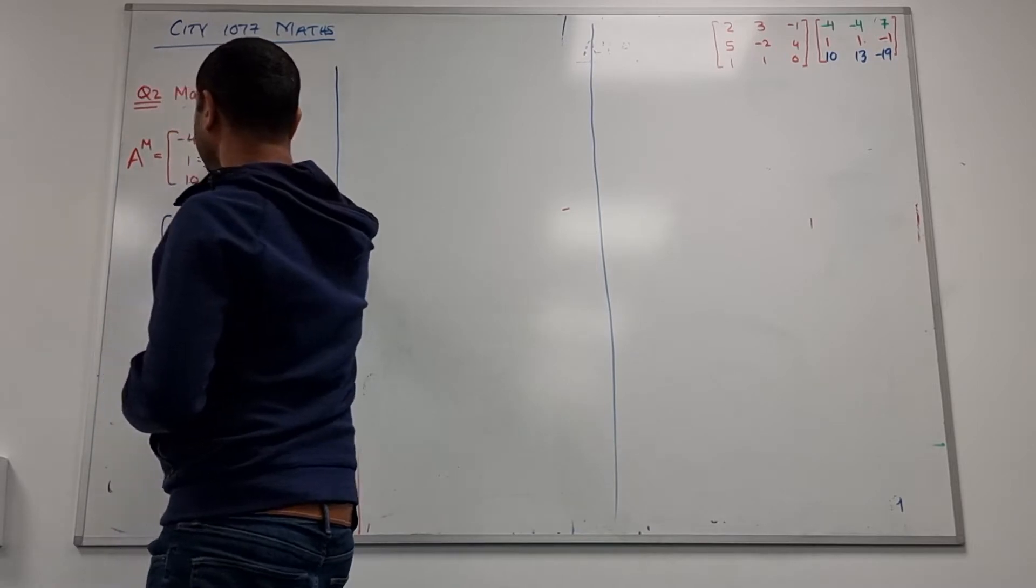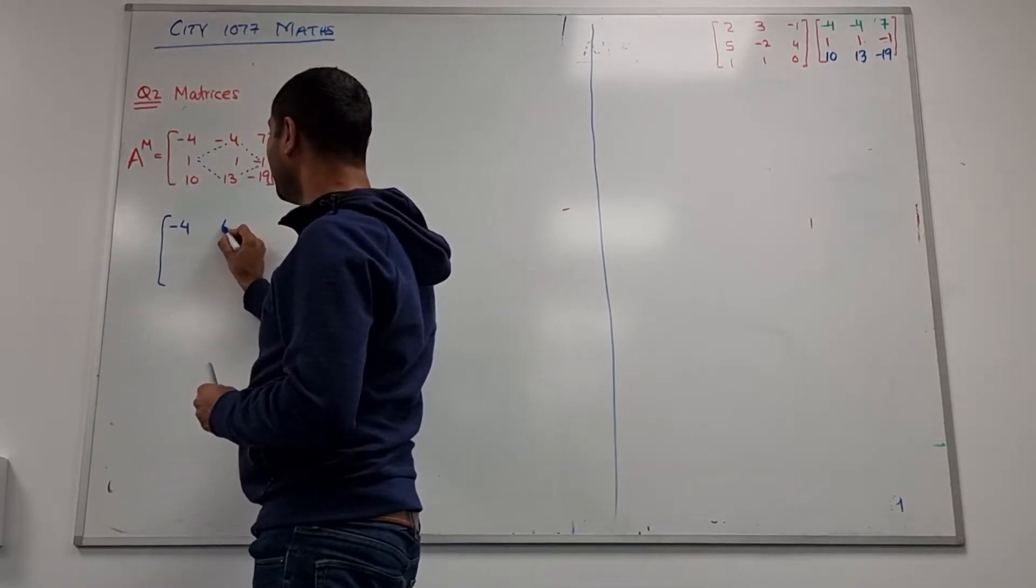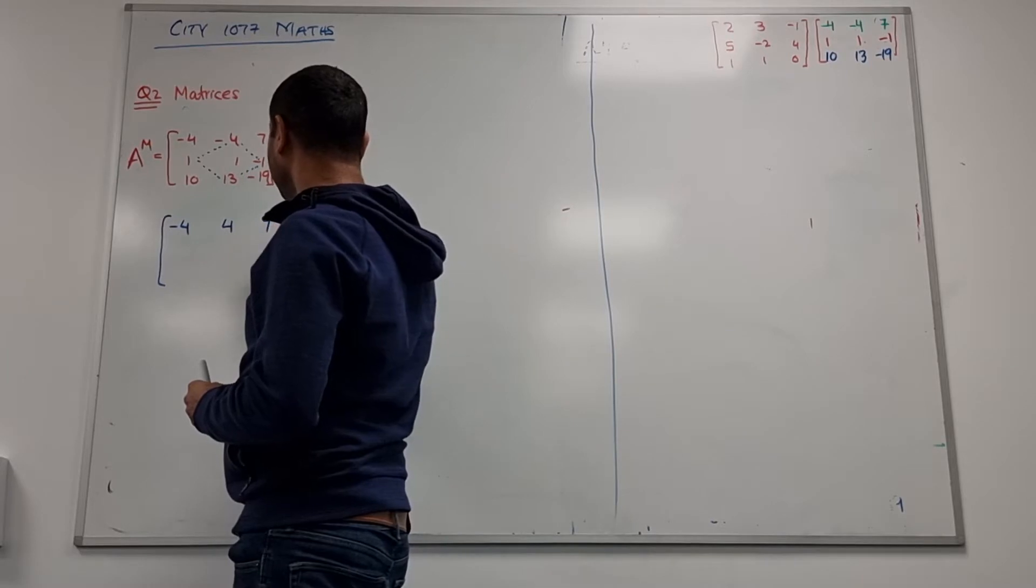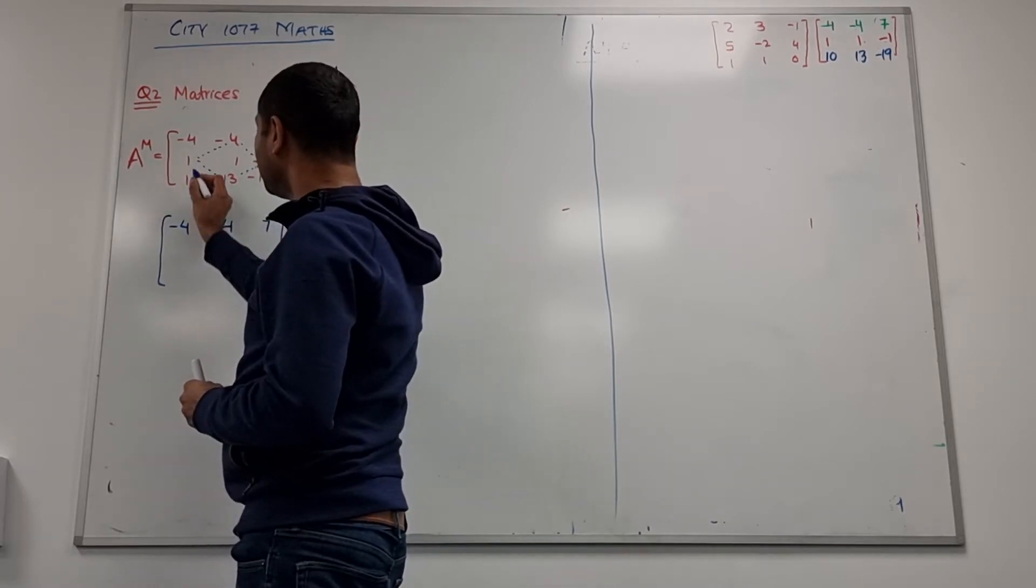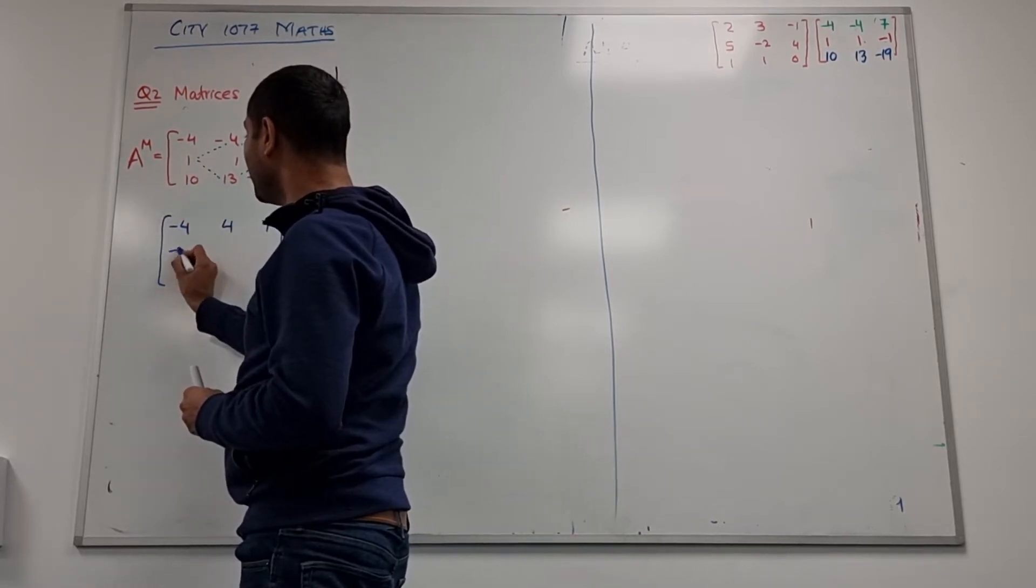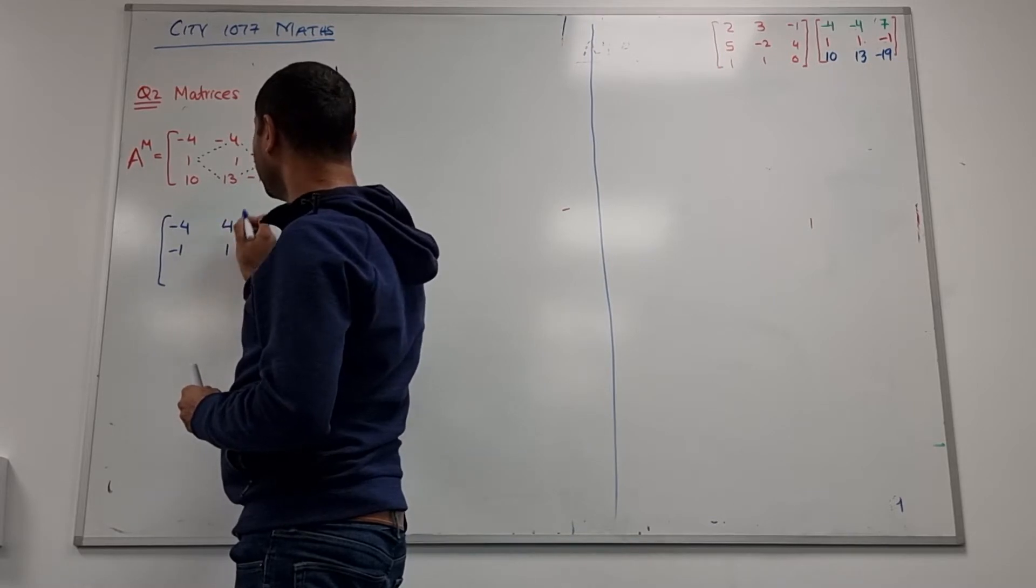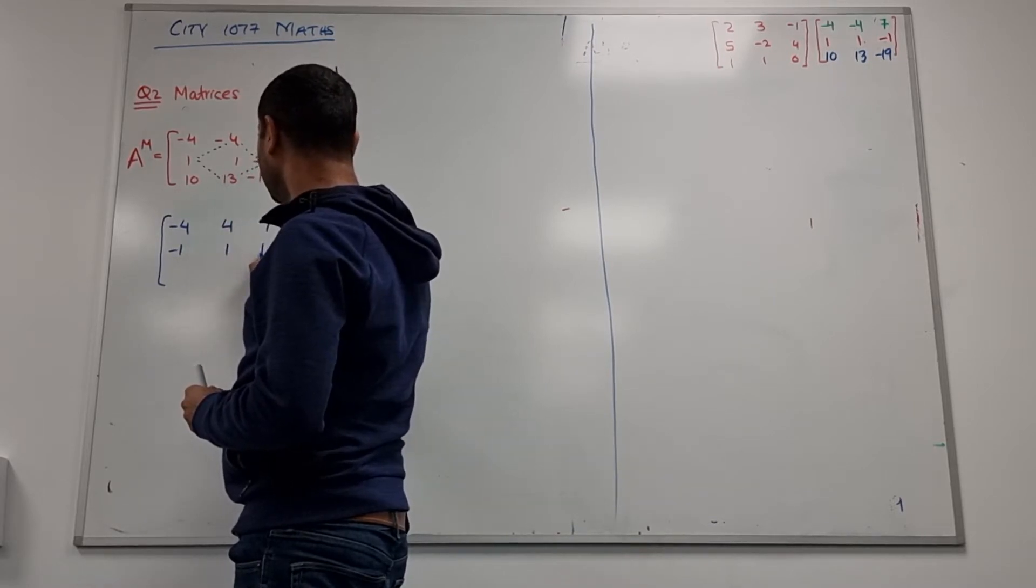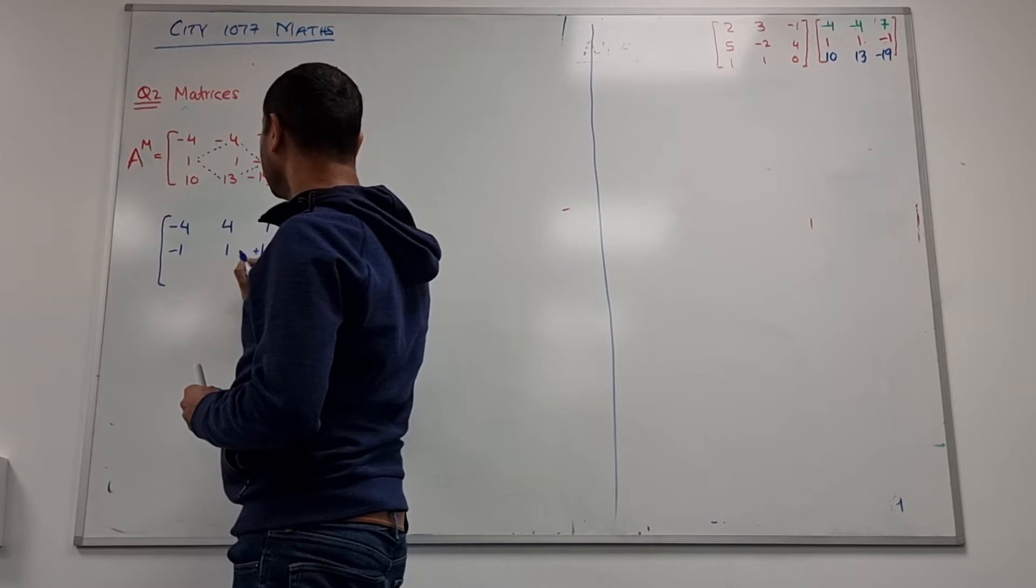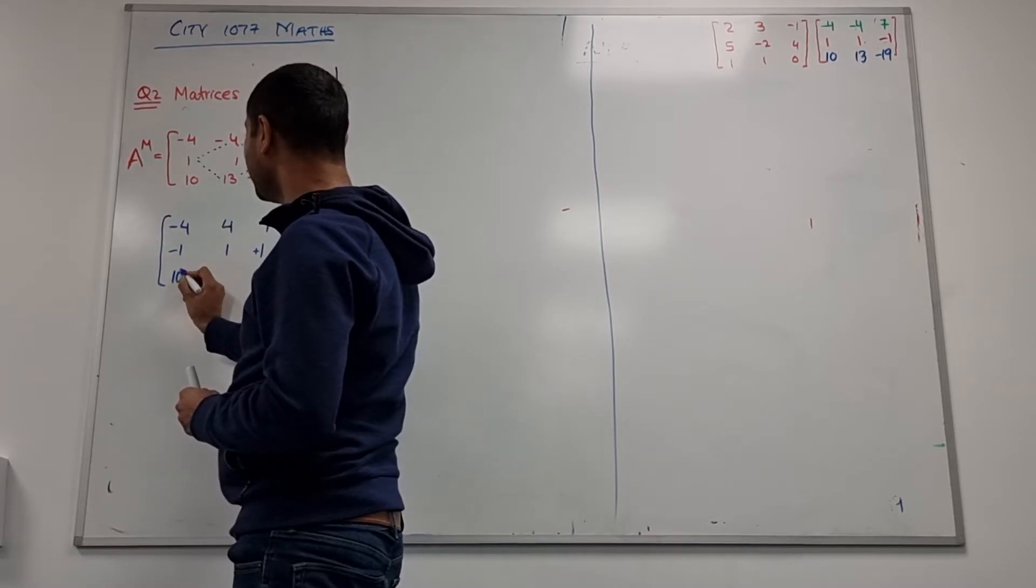The 7 as it is, this minus 1, this 1 becomes a minus 1. Now this 1 as it is, this minus 1 becomes a positive 1. So I change the sign here.